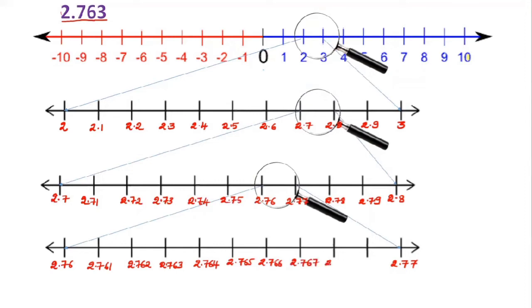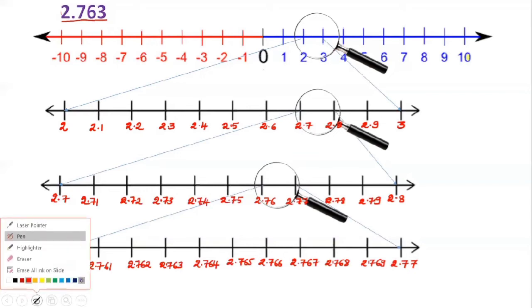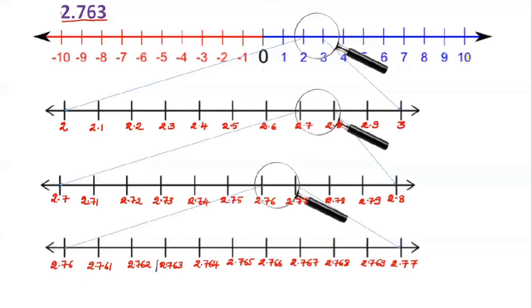Continuing: 2.767, 2.768, 2.769, then 2.77. We are told to represent 2.763, so highlight that point. This is the representation of 2.763 on a number line.